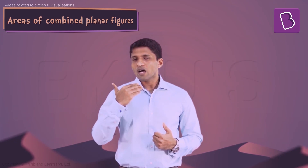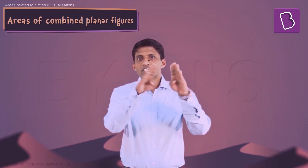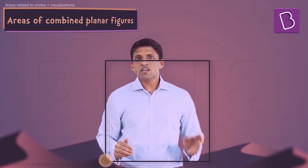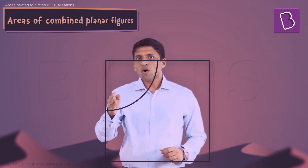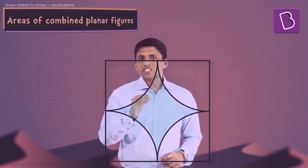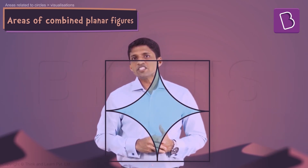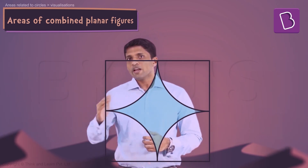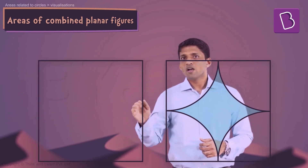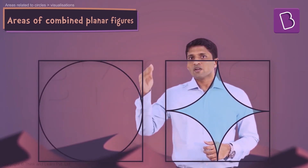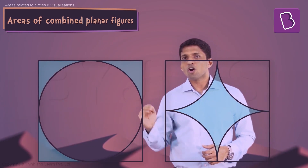I'll start by asking a question. Take a square; from all four corners, take quarter circles and shade the central region. Now take the same square and cut the maximum circle out of it, then shade the four corner regions.